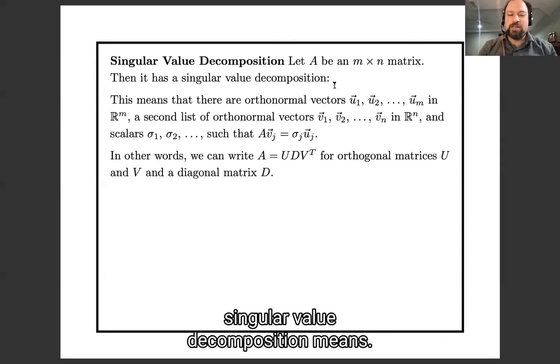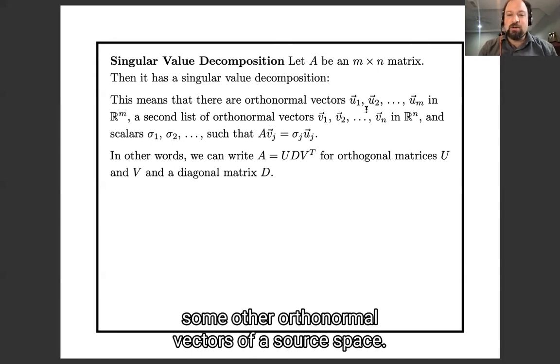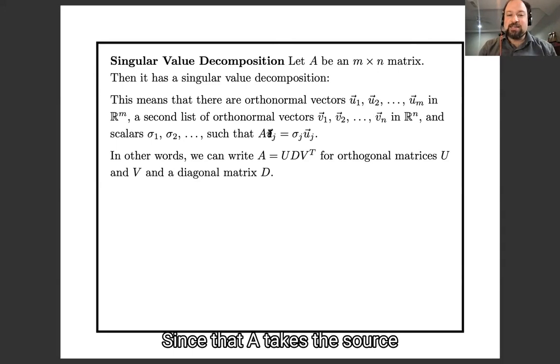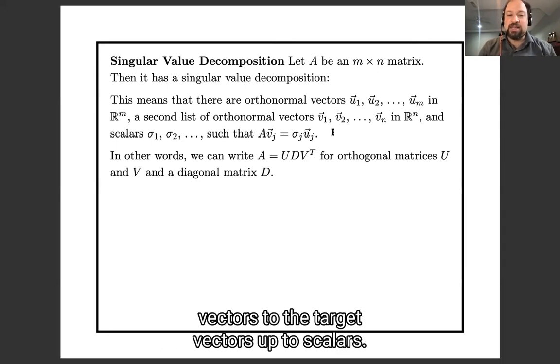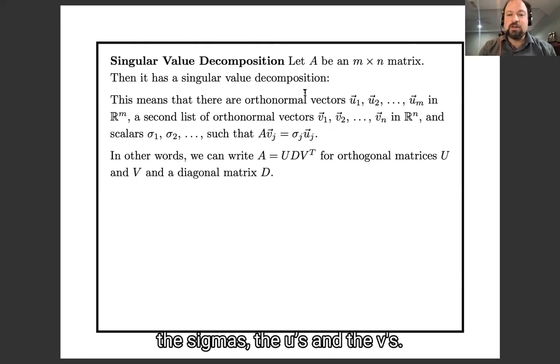So to remind you, here's what singular value decomposition means. It means we can find some orthogonal vectors in the target space and some other orthogonal vectors in the source space, so that A takes the source vectors to the target vectors up to scalars. So here is how we are going to actually find the singular values, the sigmas, the u's, and the v's. It's going to be by a trick.